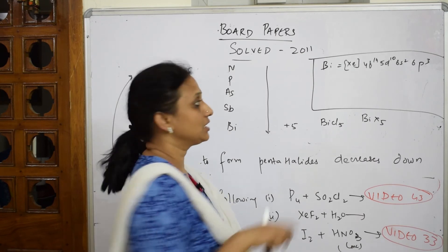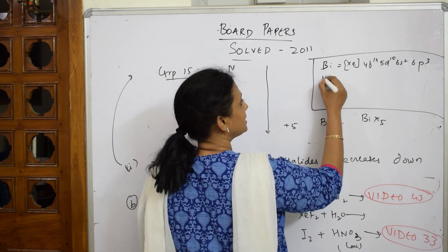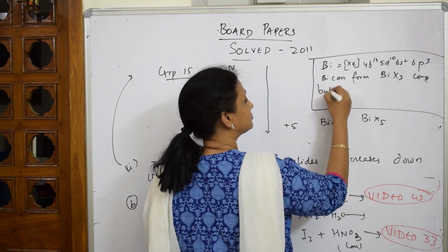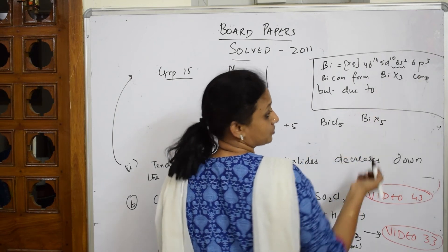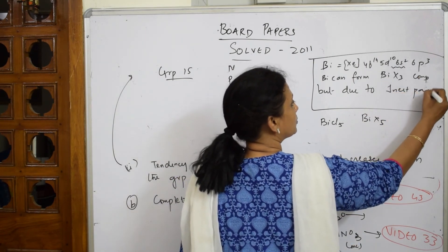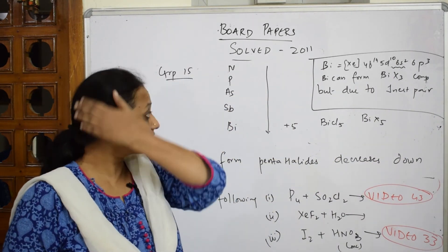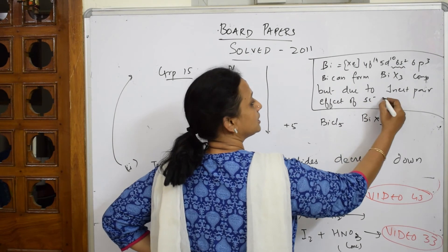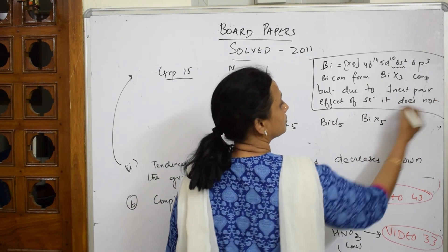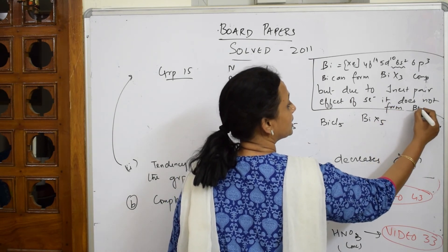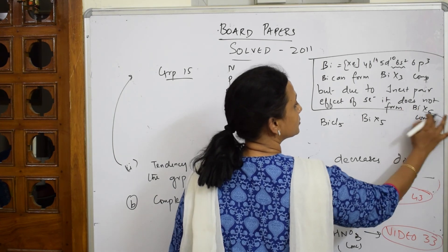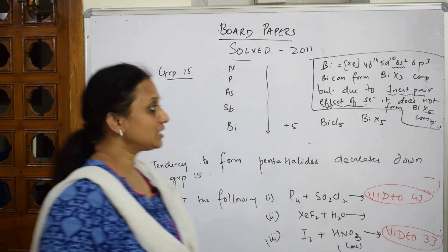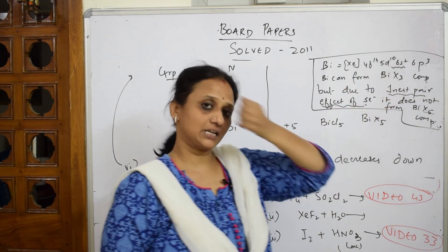It can easily donate these three electrons to form BiX3, but what happens when it comes to losing these two electrons? This s electron shows inert pair effect - it is reluctant to participate in bonding. So Bi can form BiX3 compounds, but due to inert pair effect of s orbital - you already know what is inert pair effect, I have explained for Group 13 also - reluctance of s electron to participate in bonding. Due to inert pair effect of s electron, it does not form BiX5 compounds. This inert pair effect of s electron is the keyword.